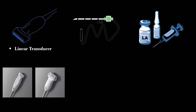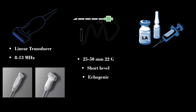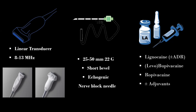Scanning is performed with a high-frequency linear transducer, preferably a short footprint probe if available. A 25 to 50 millimeter, 22-gauge short bevel echogenic nerve block needle, or 25 to 27-gauge hypodermic needles can be used. The local anesthetic is chosen according to convenience; concentration depends on the indication for the block.